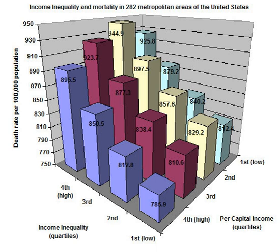For example, the United States Agency for International Development lists as benefits of its international family planning program: protecting the health of women by reducing high-risk pregnancies; protecting the health of children by allowing sufficient time between pregnancies; fighting HIV/AIDS through providing information, counselling, and access to male and female condoms; reducing abortions; supporting women's rights and opportunities for education, employment, and full participation in society; and protecting the environment by stabilizing population growth.